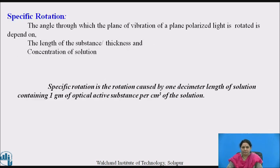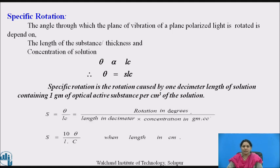What is specific rotation? Specific rotation is a measure of the optical activity of a sample. It is the rotation produced for a 1 mm slab for a solid, or 100 mm path length for a liquid. If an optically active material is kept between two crossed polarizers, the field of view becomes bright. To get darkness, the analyzer has to be rotated through an angle equal to the angle through which the plane of polarization is rotated by the optically active substance. This angle depends on the thickness of the substance, density or concentration of solution, wavelength of light, and temperature. Specific rotation is the rotation caused by 1 dm length of a solution containing 1 gram of optically active substance per cm³ of solution.